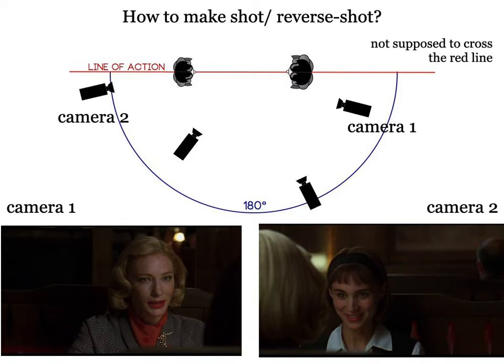But what if the camera went to the other side of the line? The spectator's perspective would be reversed — they would be seeing things back to front. If the object was two characters in a conversation, their position would be reversed. Character A would be in character B's position. Then the 180-degree rule would be broken, causing disorientation.